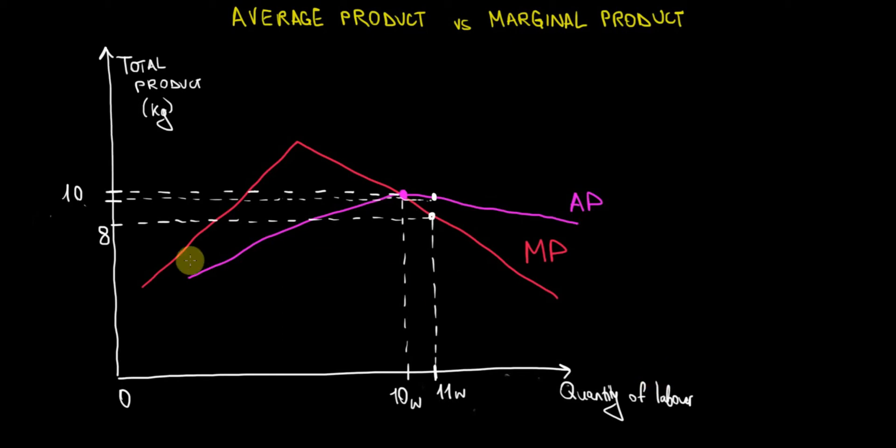So the marginal product curve, this red curve over here, as we can see it rises up to a certain point, and beyond that point it starts falling. It means that with every additional unit of labor, which in our case will be the number of workers that we hire, our production increases up to a certain point and beyond that point it starts falling down.